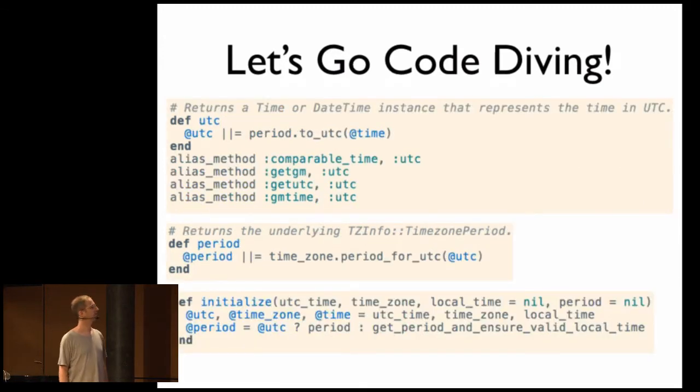Turns out it's a method that returns a memoized instance variable. In this case, if UTC is set, it'll be returned. If not, it's going to call period to UTC. What's period? Well, period is a method that returns a memoized instance variable that, if it exists, it'll get returned. If not, it's going to call time zone period for UTC on UTC, which might not be defined because that's what we're trying to... There's an initializer.